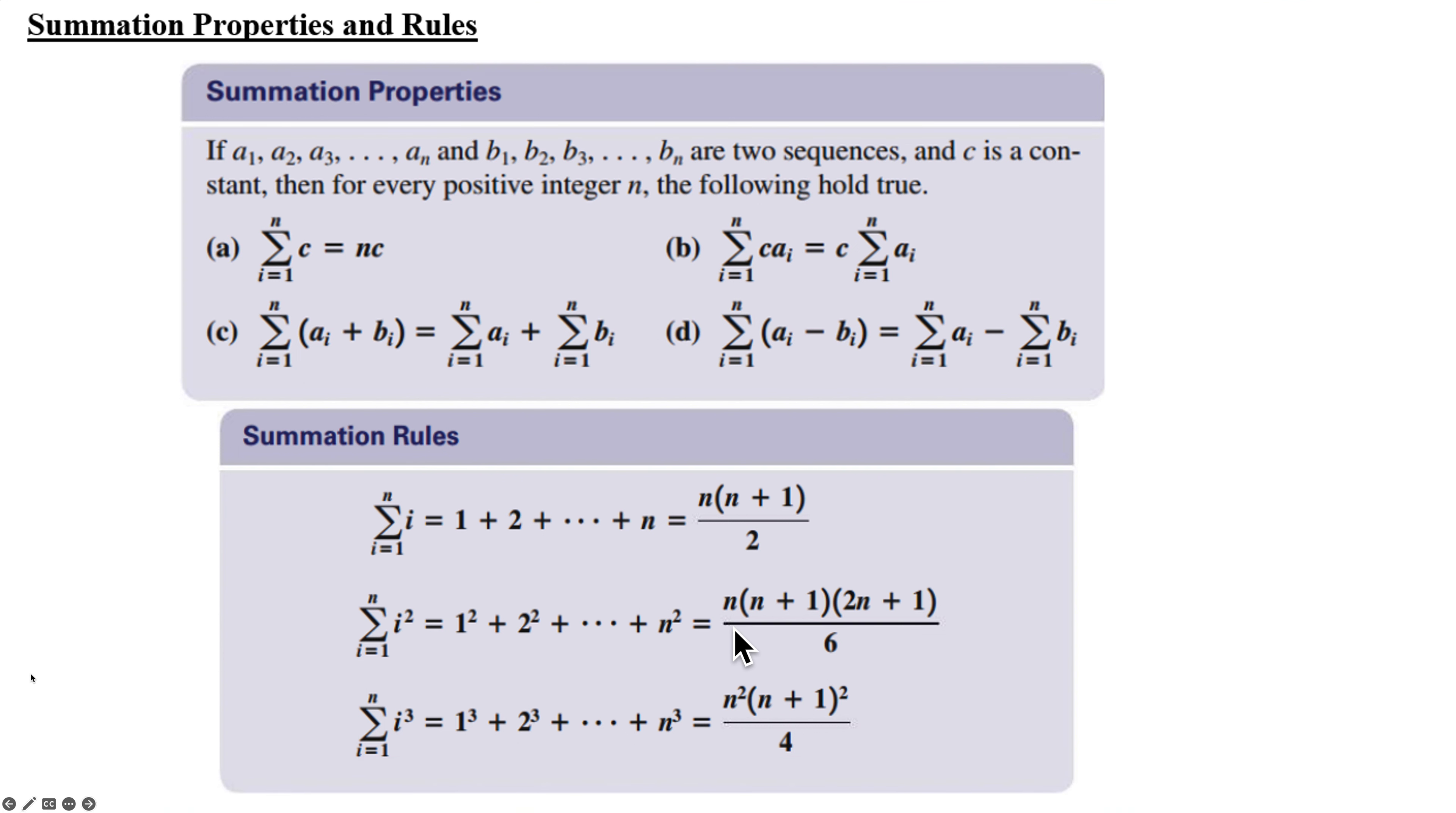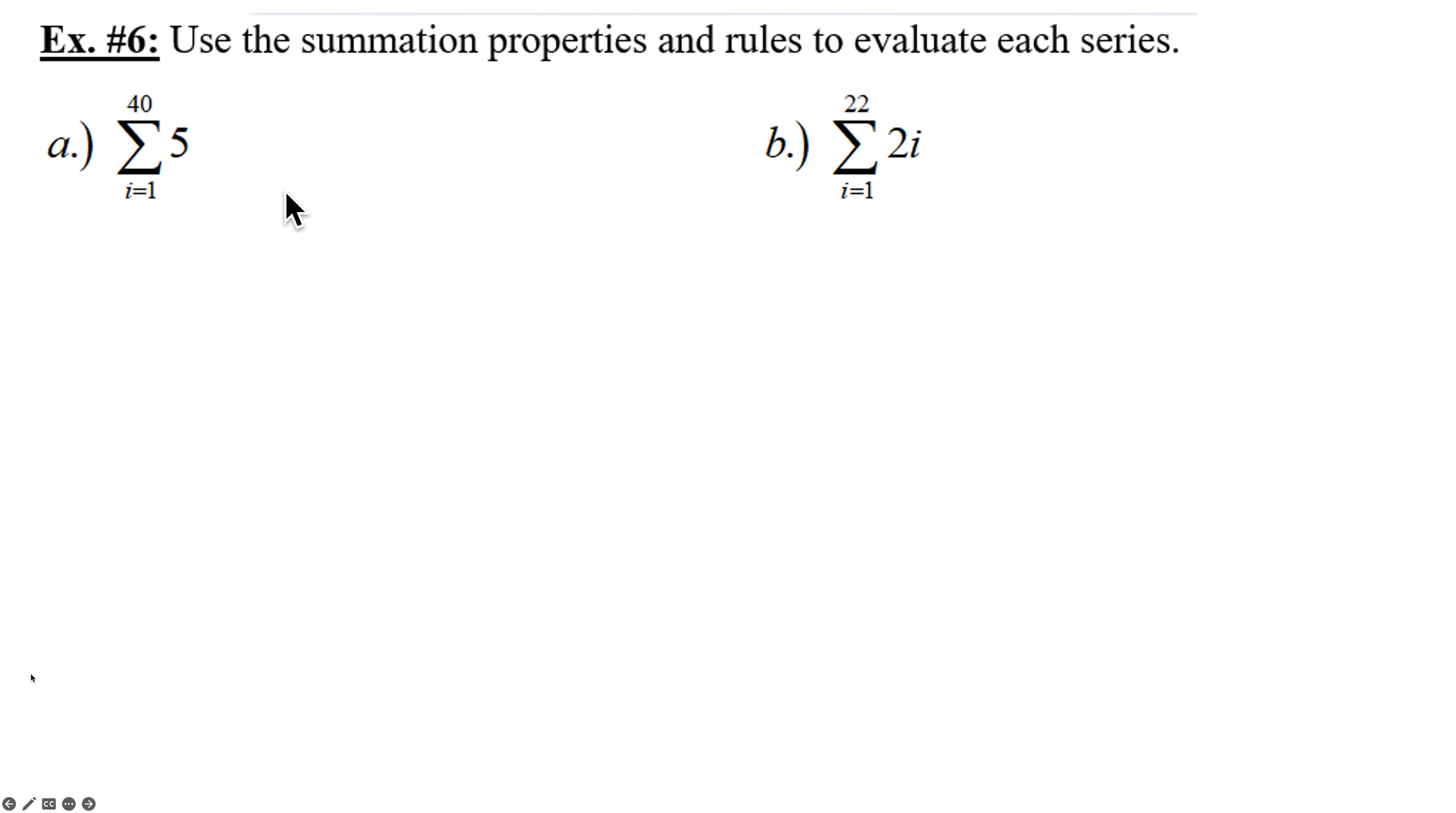So let's use these examples here. Here we have the summation of i equals 1 to 40 of just the constant 5. That's this property. 40 times 5, 200. Done.